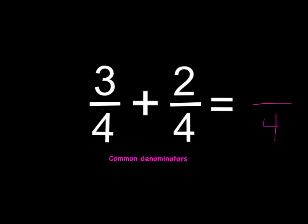3 plus 2 equals 5. So a problem like this — 3 fourths plus 2 fourths equals 5 fourths — is relatively easy to do. Don't make more work for yourself by trying to find a common denominator if the denominators are already the same.